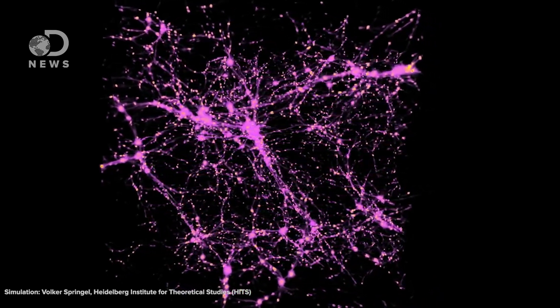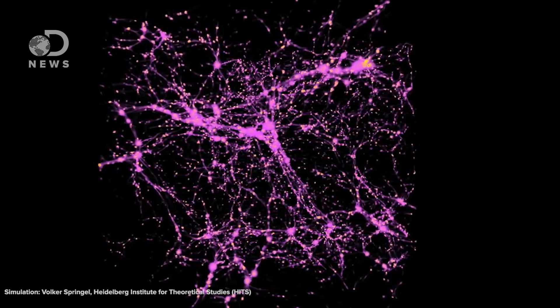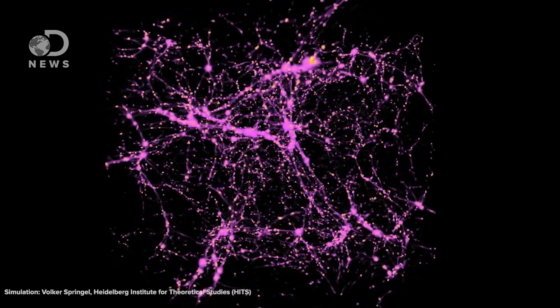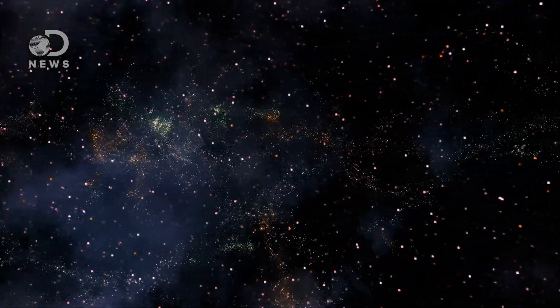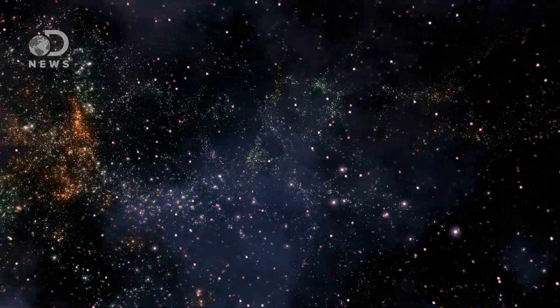The BAOs started out small, but as the universe expanded, they expanded with it and became larger, leaving their fingerprint on the structure of the entire universe. As this happened, clusters of galaxies formed inside the high-density regions caused by the BAOs.